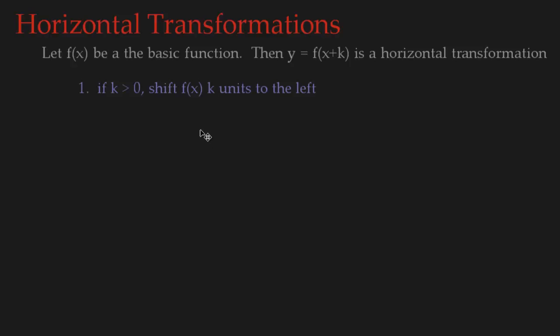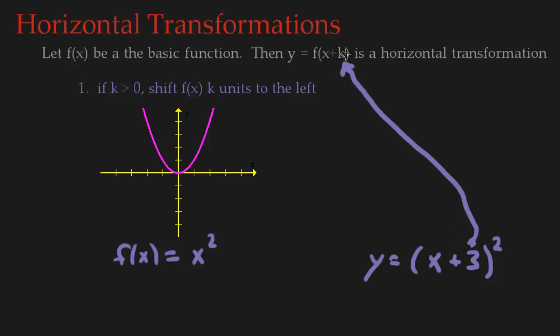So let's take a look at a quick example. So here's our basic function. We have f of x equals x squared. Now I want to do a shift to the left. So let's try graphing y equals, let's do x. Now k has to be positive, so let's do x plus 3 squared. So you match this up. Notice that the 3 here, that's k, and k is positive, because 3 is positive. So let's see what this looks like.